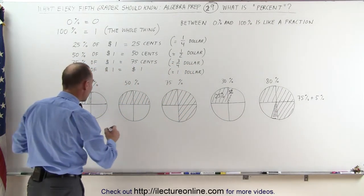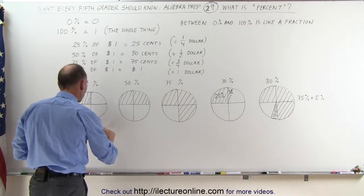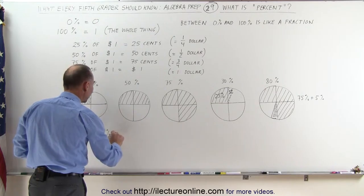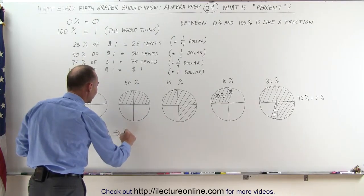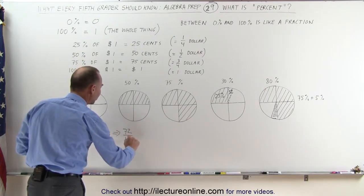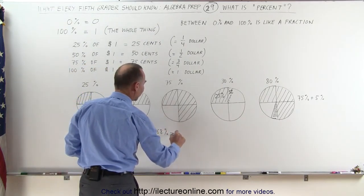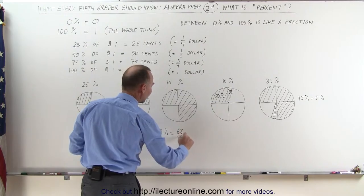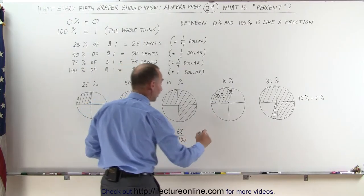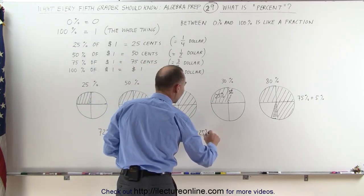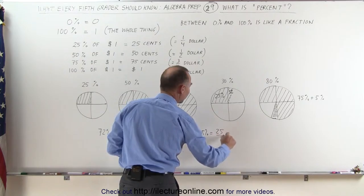It turns out that when we talk about percent, let's say 72%, the way we can think of it, it's the same as saying 72 divided by 100. Or if we have 68%, we can say that's the same thing as 68 divided by 100. Just like 25% is equal to 25 over 100.